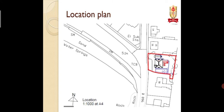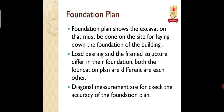In the location plan, you have to show your plot with respect to some permanent structure. For example, if there is a temple, you have to show the temple and show where your plot is relative to it. If you want to show our college location, you have to show the Hanuman temple, and near it there is a school, and in front of the school is the Ruined Battery Polytechnic College. The location plan is drawn at a scale of 1:5000 or 1:600.